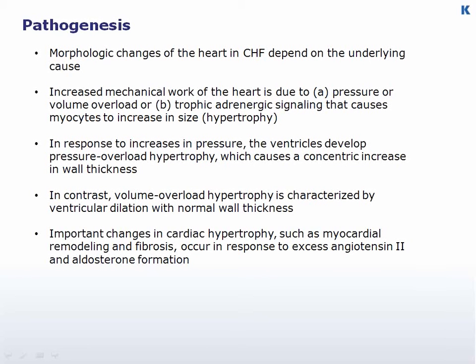Commonly, the increased mechanical work of the heart due to pressure or volume overload, or trophic adrenergic signaling causes myocytes to increase in size or hypertrophy. This cumulatively produces an increase in the size and weight of the heart, two to three times of normal. In response to increases in pressure, such as in hypertension or valvular disease, the ventricles develop pressure overload hypertrophy, which usually causes a concentric increase in wall thickness. In contrast, volume overload hypertrophy is characterized by ventricular dilation with normal wall thickness.